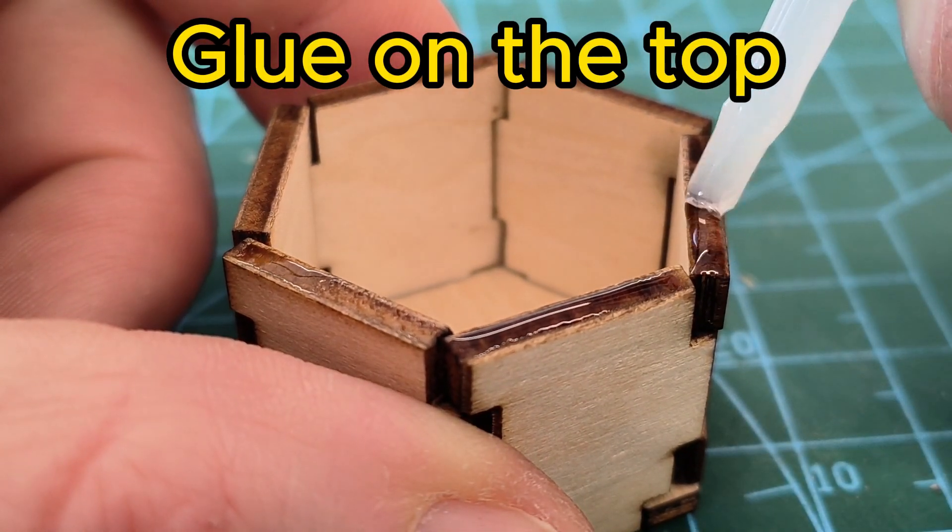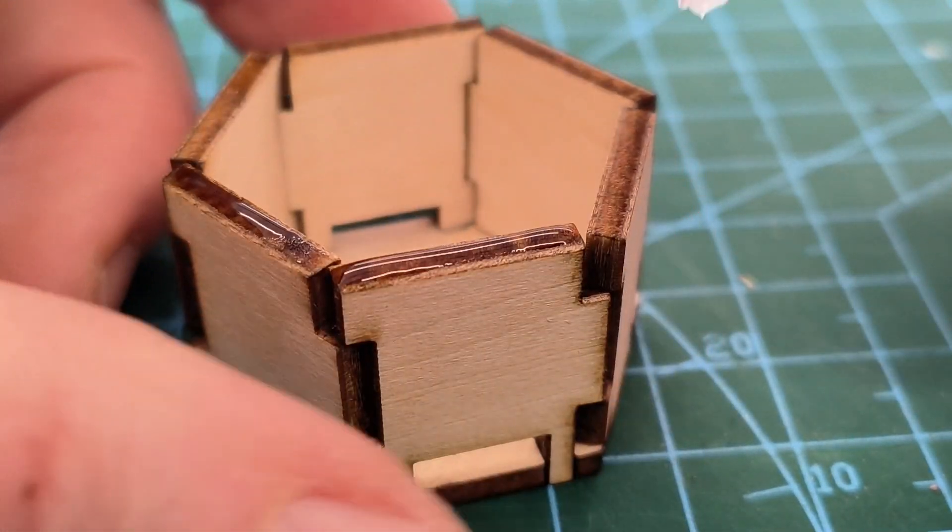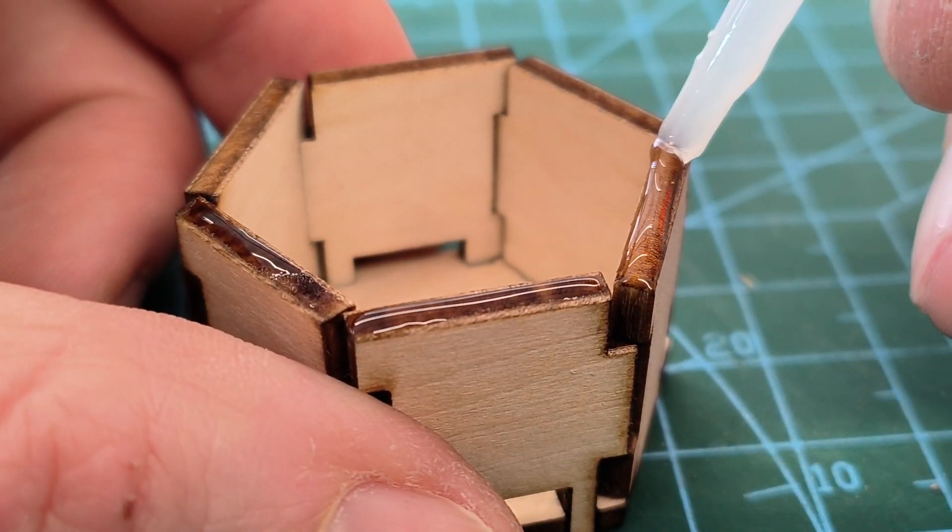At the very top, we just put a lining of superglue so that we can glue on the acrylic on the top.